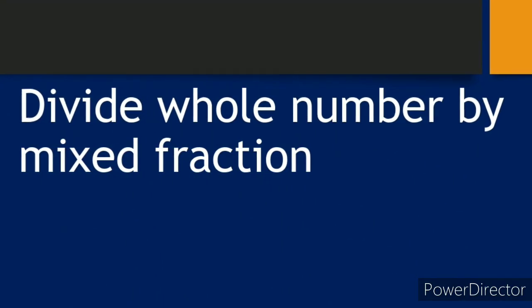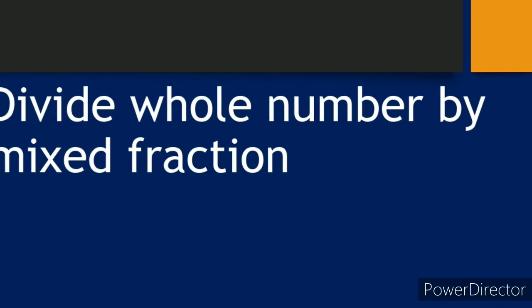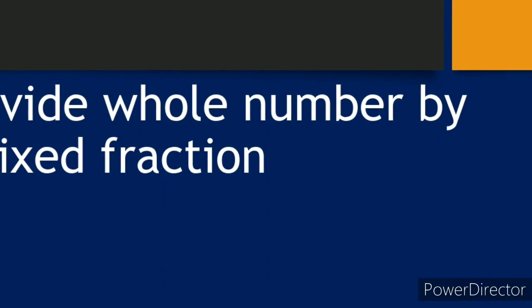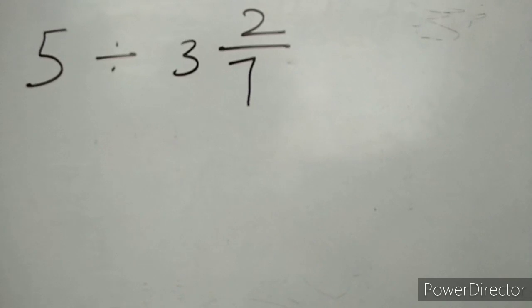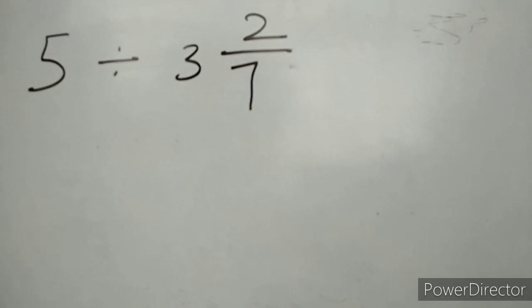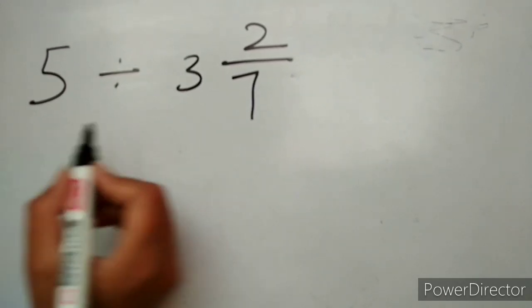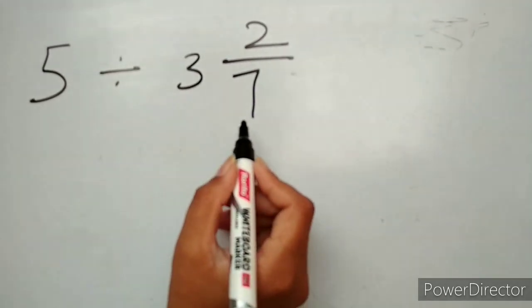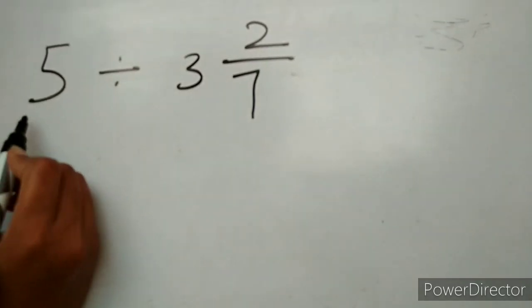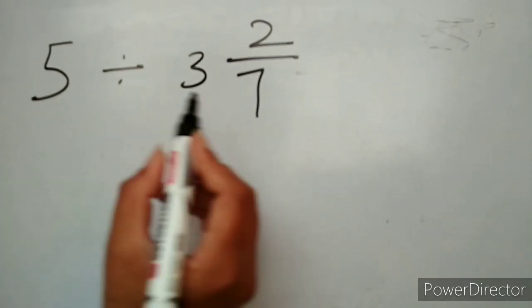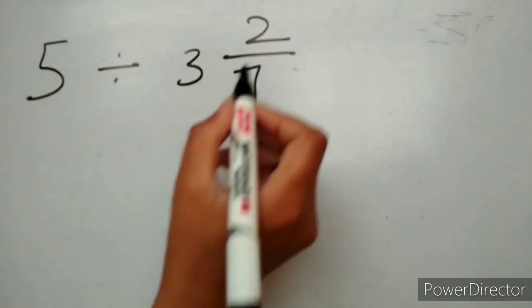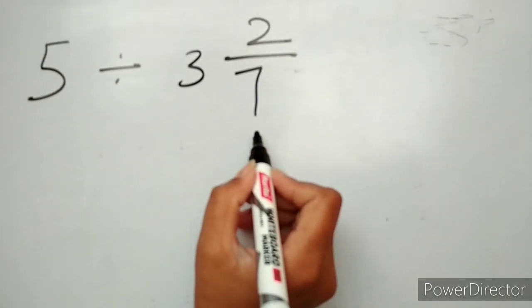In this video we learn about division of a whole number by a mixed fraction. Our first example is 5 divided by 3 and 2 upon 7. Here 5 is a whole number and 3 and 2 upon 7 is a mixed fraction.